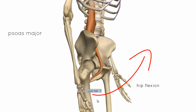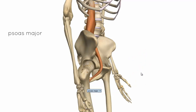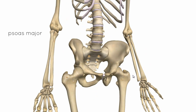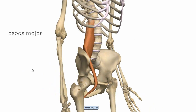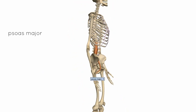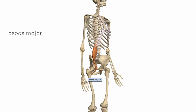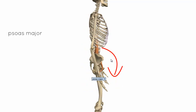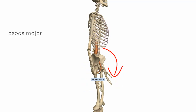So it brings the thigh up. Also in the lying position — if you imagine this model in the supine position, the muscle can act in the reverse way. It can flex the vertebra, so if in the supine position, the psoas major can contract to bring the vertebra up, producing flexion of the vertebral column.